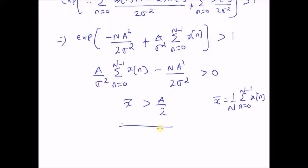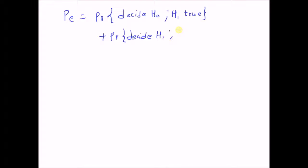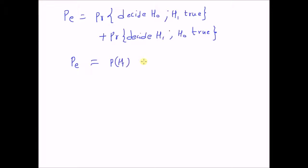Now let us calculate the probability of error corresponding to this problem. The probability of error Pe is defined as: probability that we decide H0 when H1 is true, plus probability that we decide H1 when H0 is true — that is, probability of a miss plus probability of a false alarm, weighted by the prior probabilities. So Pe = P(H1)·P(H0|H1) + P(H0)·P(H1|H0).